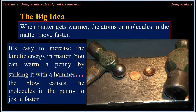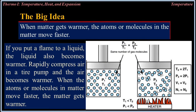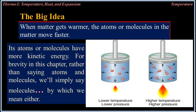It's easy to increase kinetic energy in matter. You can warm a penny by striking it with a hammer — the blow causes the molecules in the penny to jostle faster. If you put a flame to a liquid, the liquid also becomes warmer. Rapidly compress air in a tire pump and the air becomes warmer. When the atoms or molecules in matter move faster, the matter gets warmer — its atoms or molecules have more kinetic energy. For brevity in this chapter, rather than saying atoms and molecules, we'll simply say molecules, by which we mean either.